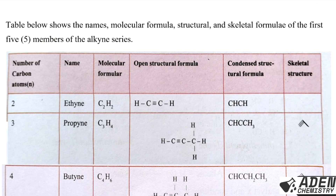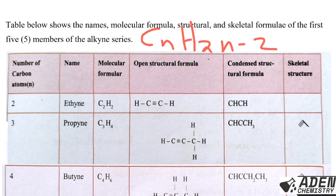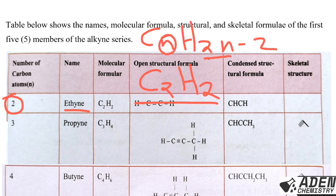The table below shows the names, molecular formulas, and structural skeleton formulas of the first five members of the alkyne series. The number of carbon atoms n starts from two. For ethyne with two carbon atoms, using the general formula CₙH₂ₙ₋₂: C₂H₂ (two times two is four, minus two is two). For propyne with three carbon atoms: C₃H₄ (two times three is six, minus two is four).